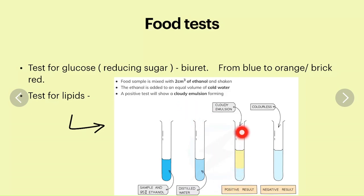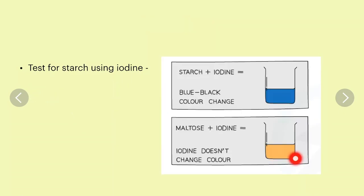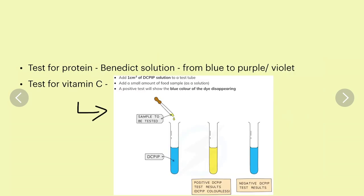The test for starch using iodine: starch plus iodine gives a blue to black color change. Maltose plus iodine - the iodine will not change color. Test for protein is Benedict solution. From blue, it will change to purple or violet if protein is present.